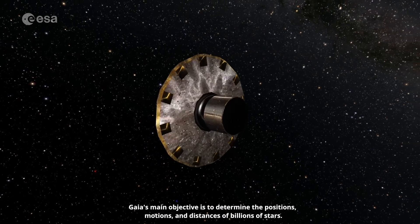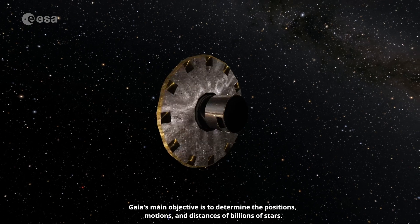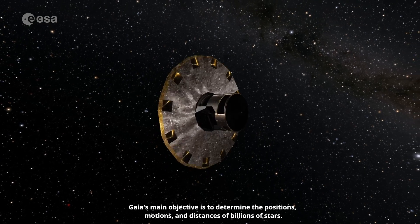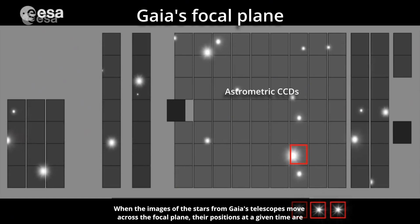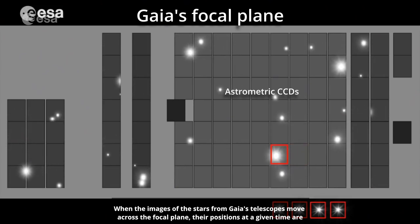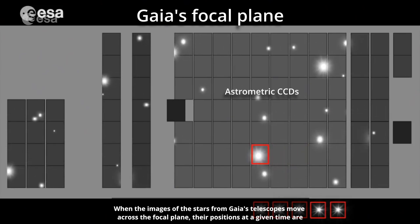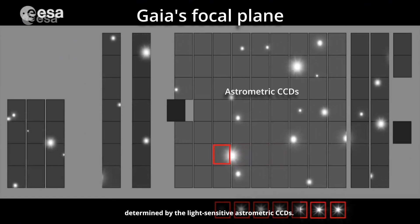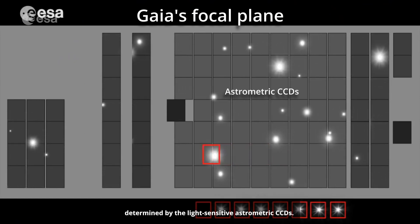Gaia's main objective is to determine the positions, motions and distances of billions of stars. When the images of the stars from Gaia's telescopes move across the focal plane, their positions at a given time are determined by the light-sensitive astrometric CCDs.